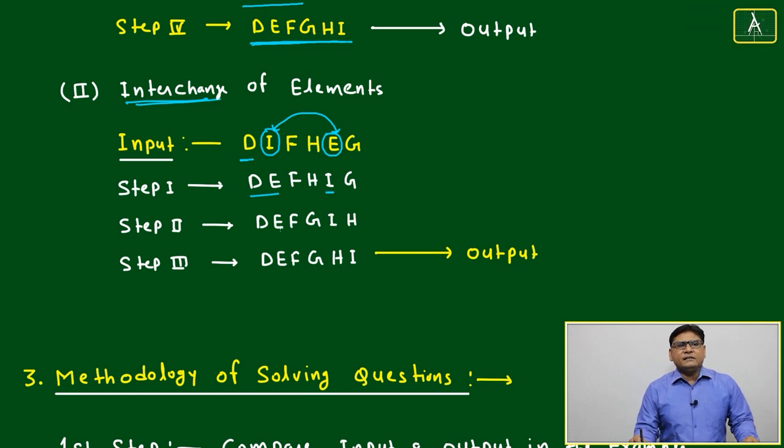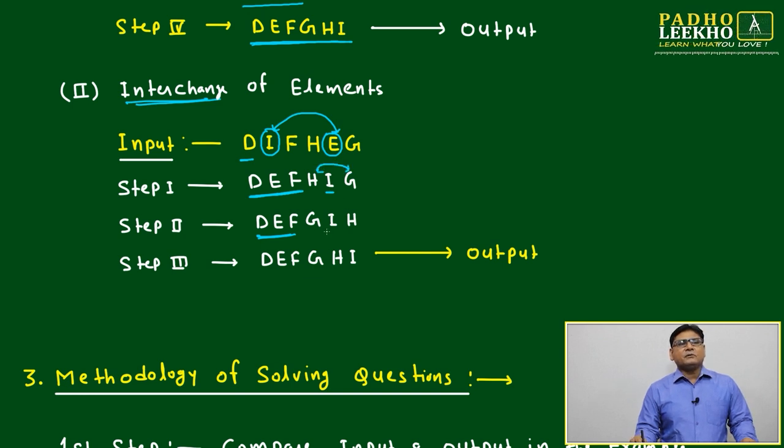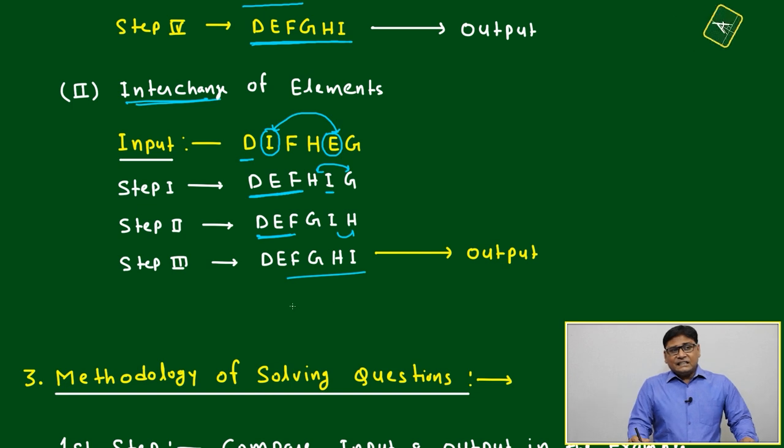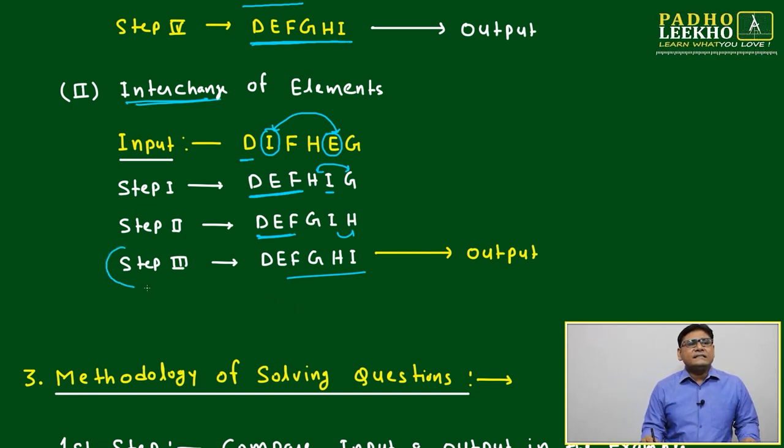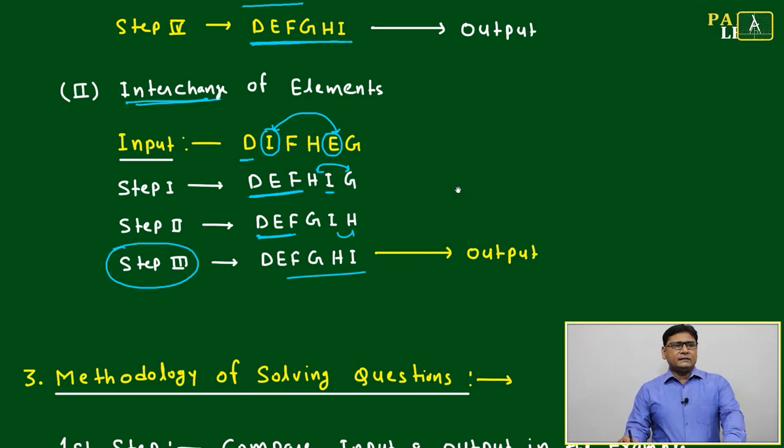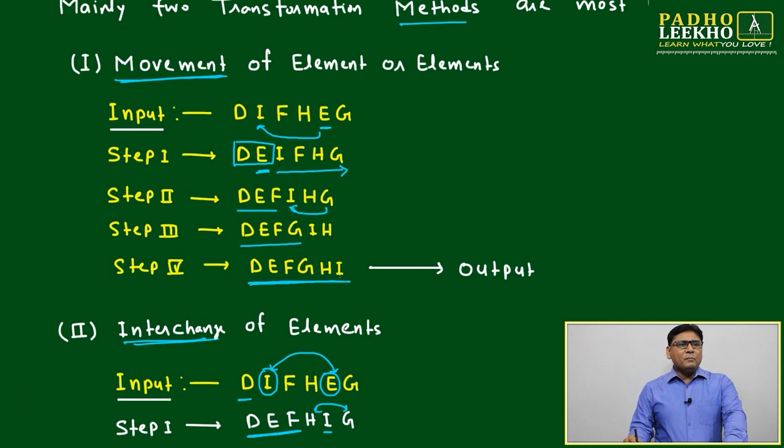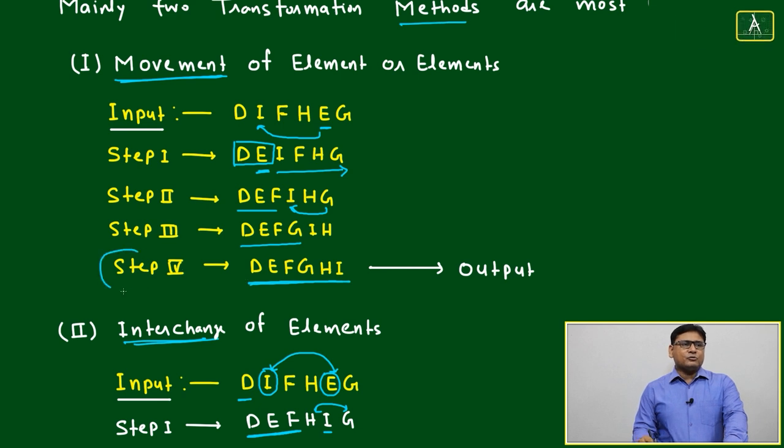After F we need G, so G and H must be interchanged. Then it will become G I H. Again I and H must be interchanged. In interchange, you got the desired output in three steps only, but in movement of elements, you got the same output in four steps. This is the difference.